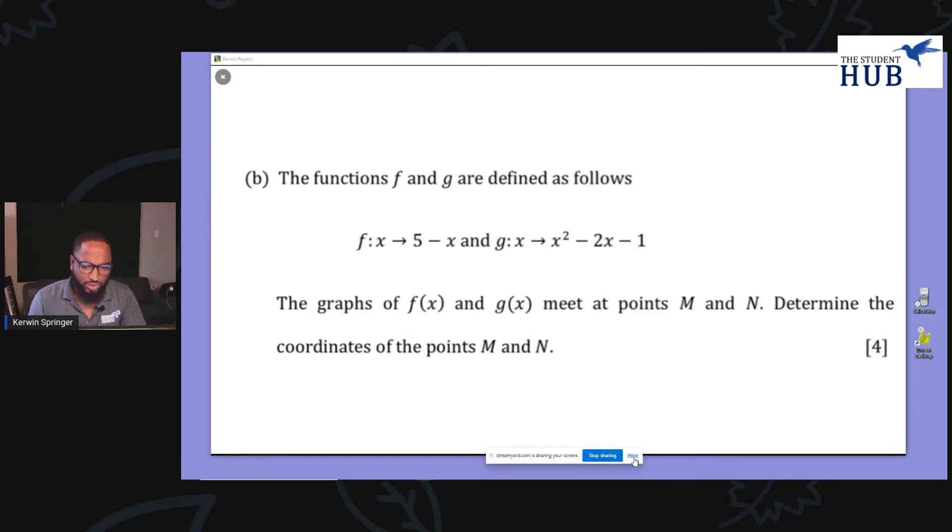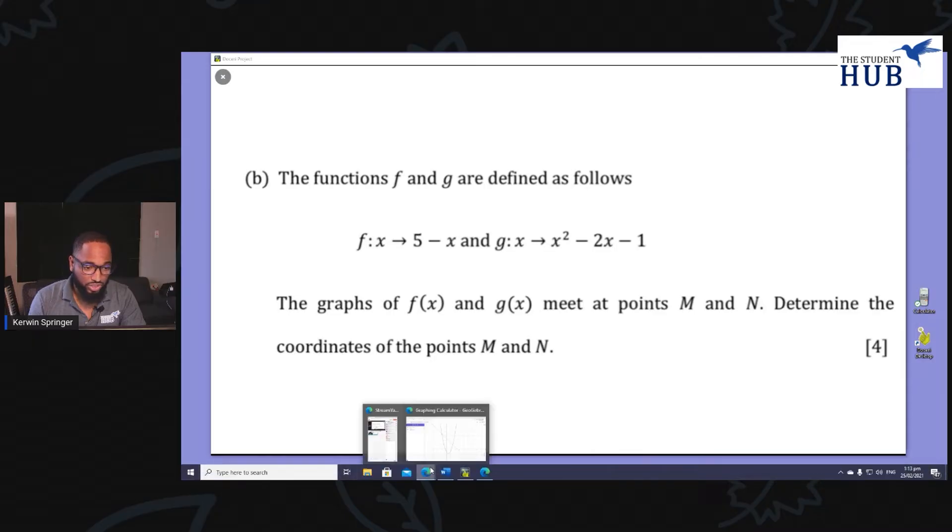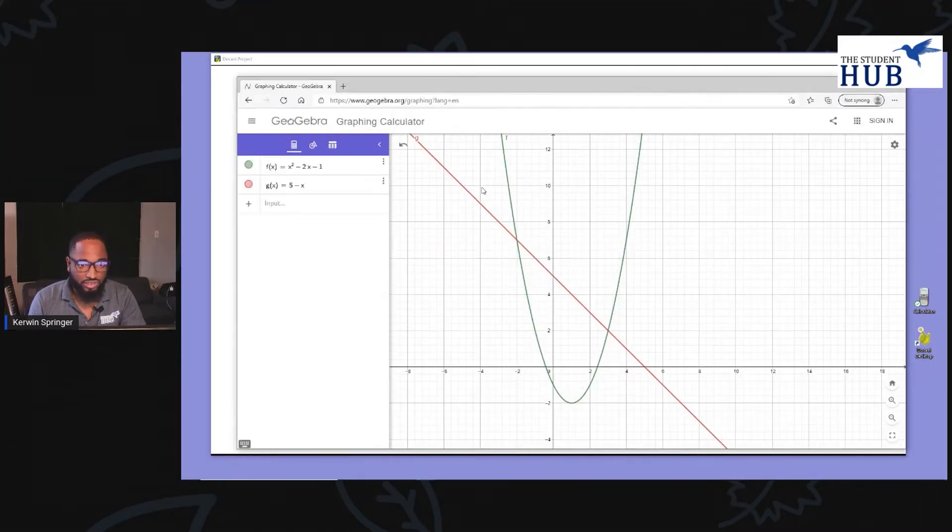Now there are other ways to do this. You can do it graphically as well. Just to give you a little idea of what is happening, I'm going to show you the graph of this. Take a look at this. This is the line, the red here. That's our line. And you can see the parabola which represents the f(x), x squared minus 2x. So these are actually meeting at these two points.